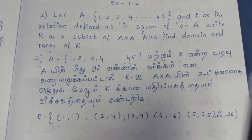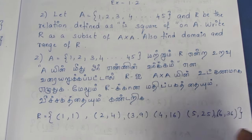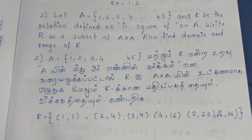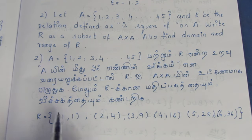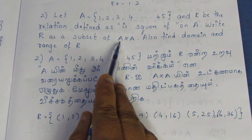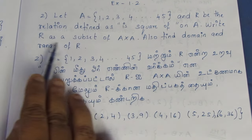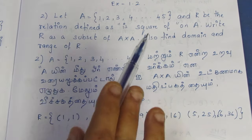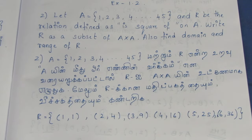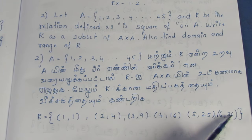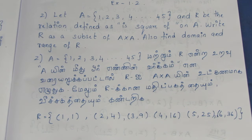So we stop at 6. If we put 7, the square is 49, which is not in A — A only goes up to 45. So 49 is not a member of A. Therefore R as a subset of A cross A stops at 6, since 7 squared equals 49 which exceeds 45.